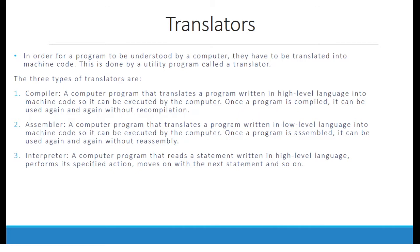2. Assembler — a computer program that translates a program written in low-level language into machine code, so it can be executed by the computer. Once a program is assembled, it can be used again and again without reassembly. A compiler and assembler are quite similar, except one translates from high-level language and one translates from low-level language.